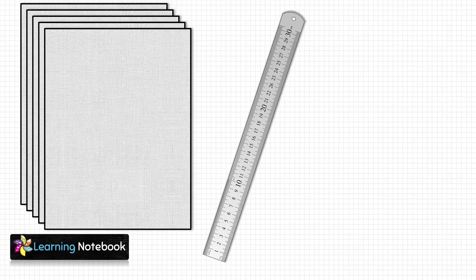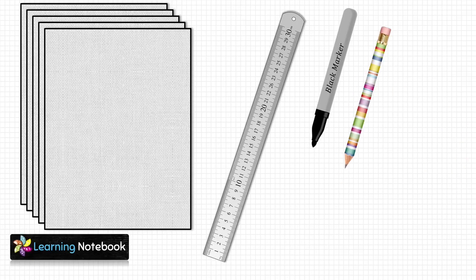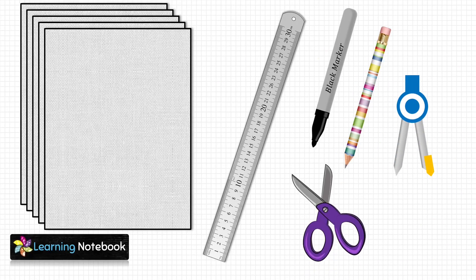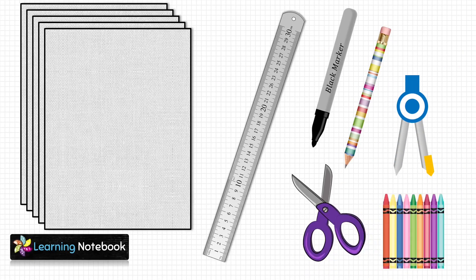For this activity we need a few white sheets, a ruler, a black marker pen, a pencil, a compass, a pair of scissors and a box of crayons.